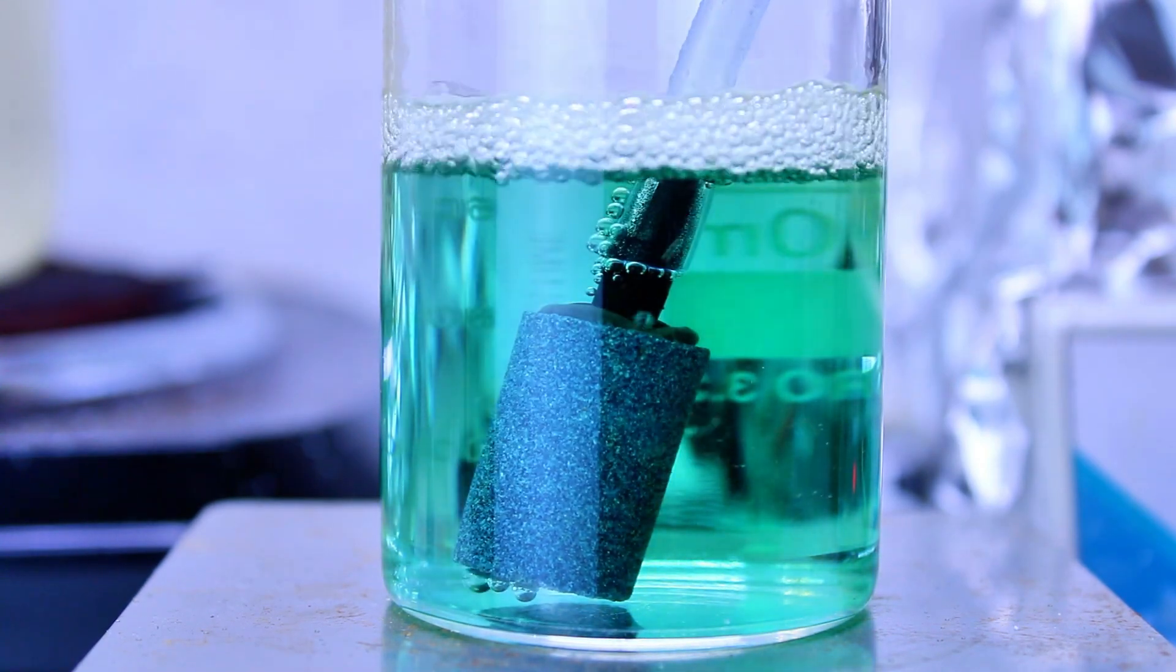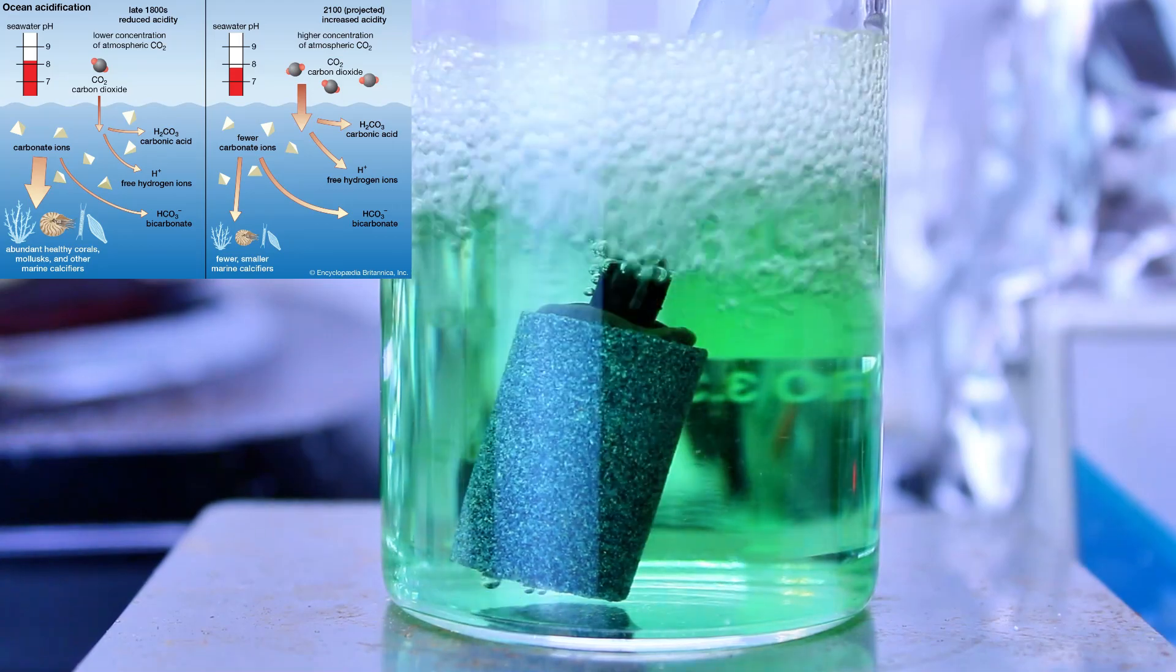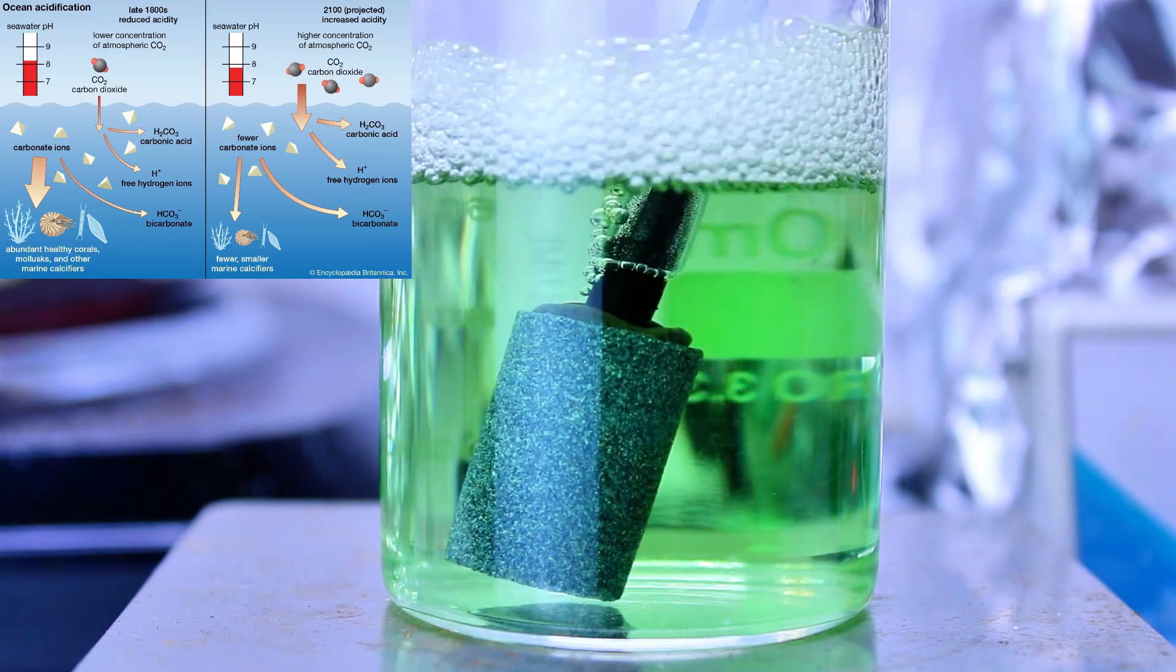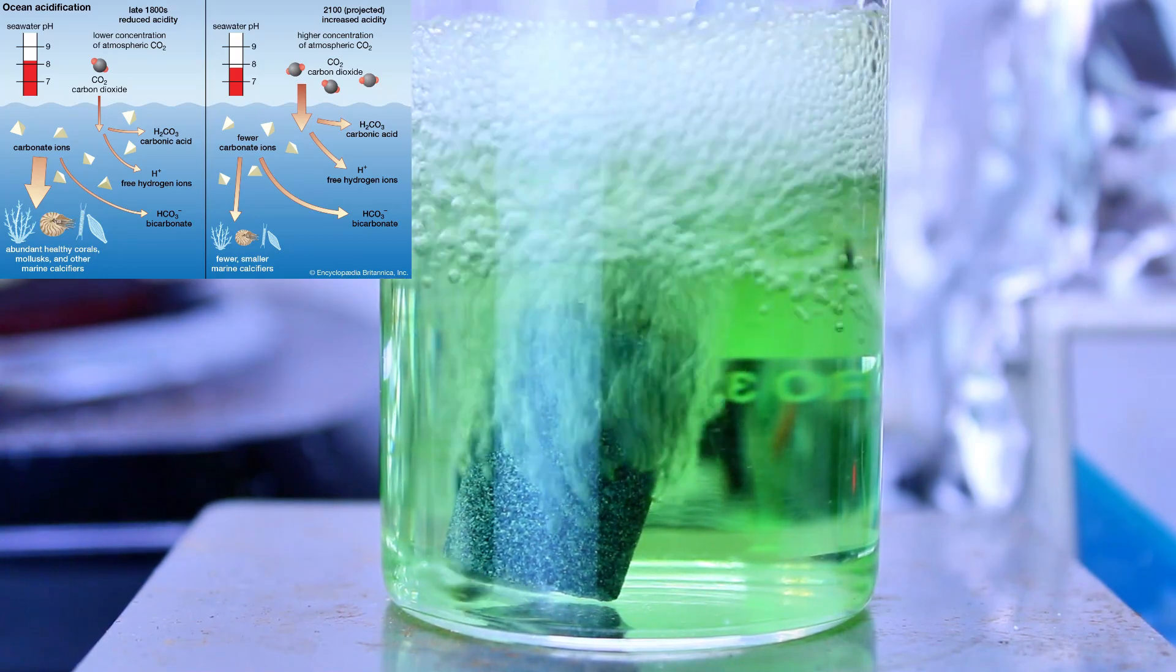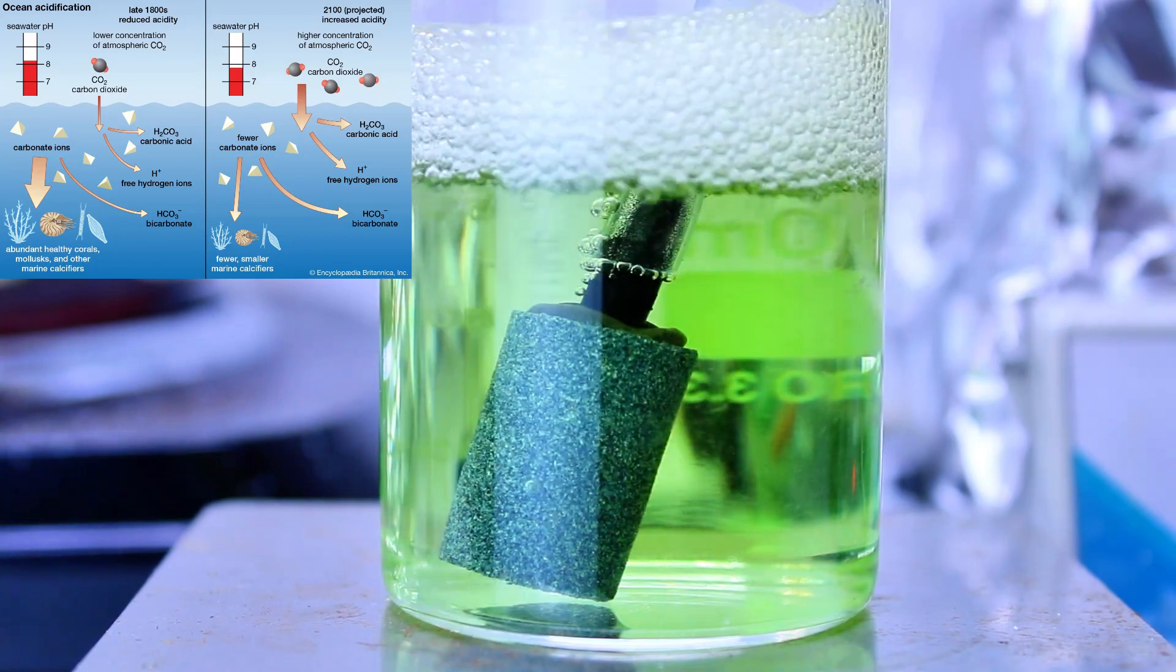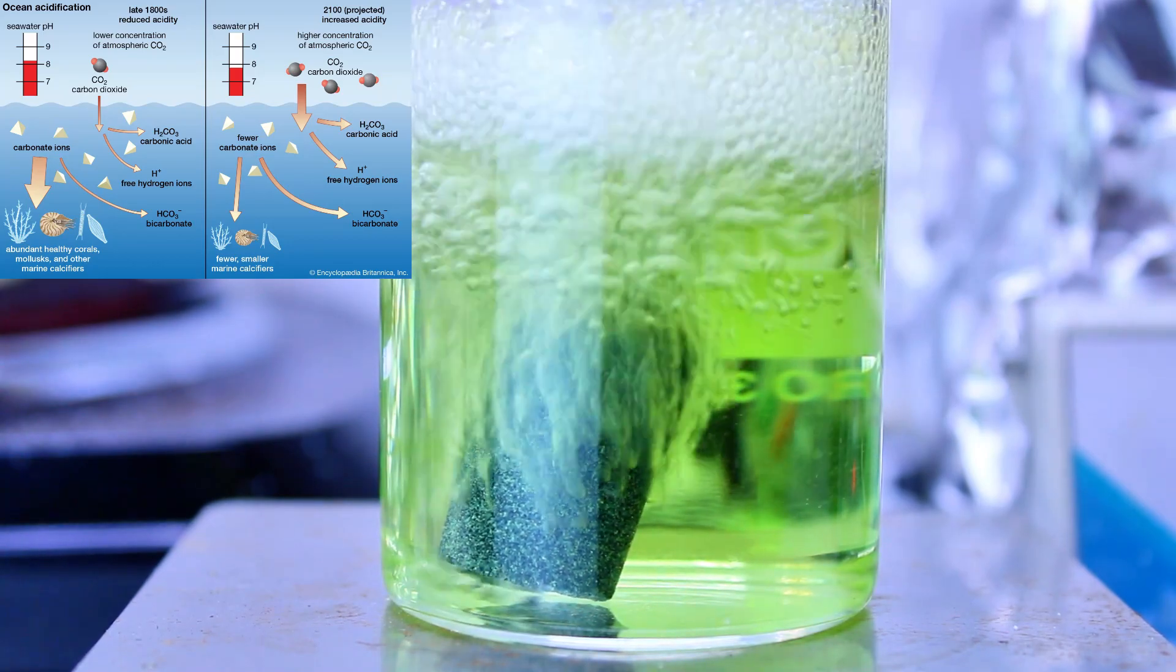Now at this point you're probably wondering, okay, so more CO2 dissolved in water makes the water more acidic. Why is this a problem for the ocean? And the reason for that is that carbonic acid, as well as the carbonate and bicarbonate ions, exist in a delicate equilibrium in the ocean.